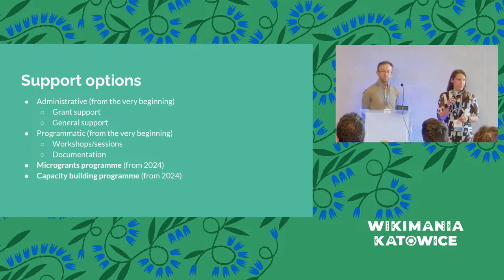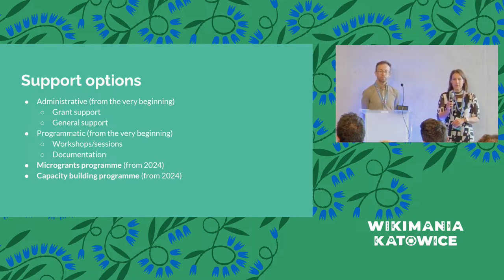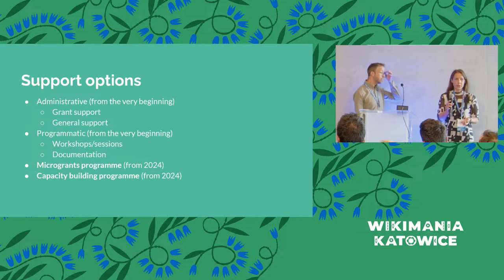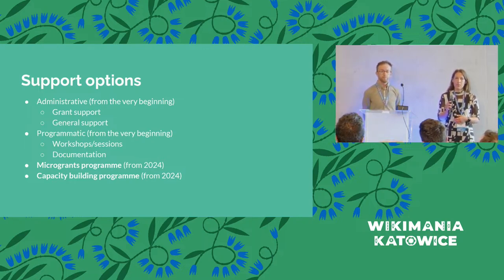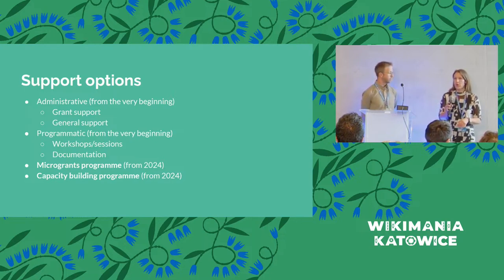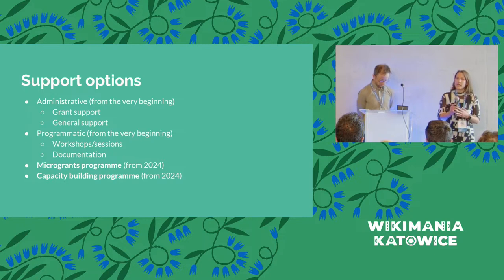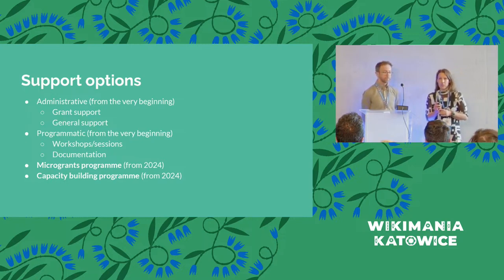Tony explained about the beginning. So, basically, what was first done was research in the region about needs assessment. Upon that research, it was decided that CE Hub would be covering three areas — we call them the three pillars of the CE Hub. The first one is administrative support, the second one is programmatic, and the third one is communication-related support.